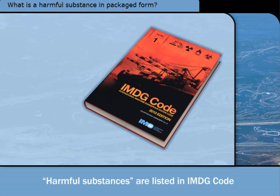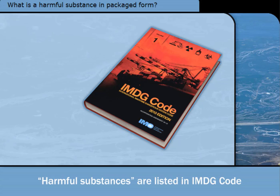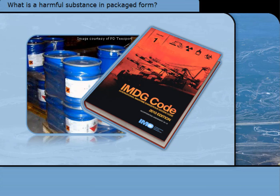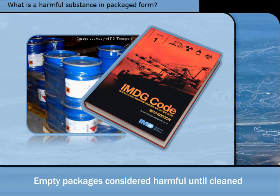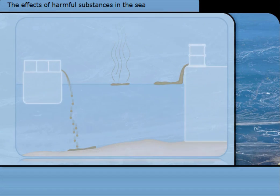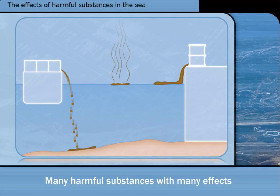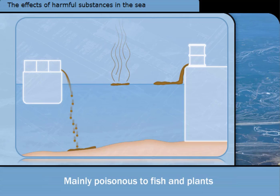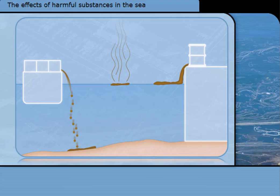A harmful substance is defined in Annex 3 as a substance which is listed as a marine pollutant in the International Maritime Dangerous Goods Code, or which presents a similar hazard. The packages containing the harmful substances come in all sorts of forms, from small plastic drums to road tankers, and are loaded or discharged as cargo. Empty packages that have contained harmful substances are considered the same as full ones, until the packages have been cleaned of all residues. A very large number of harmful substances may be carried in packaged form. The main concerns are the poisonous effects on fish, shellfish and aquatic plants, both immediately and over time. Each individual substance has different chemical and physical properties which will affect the nature, position and persistence of the pollution.